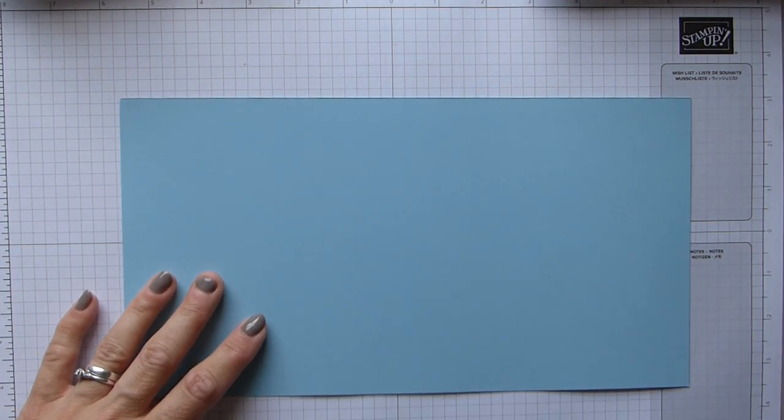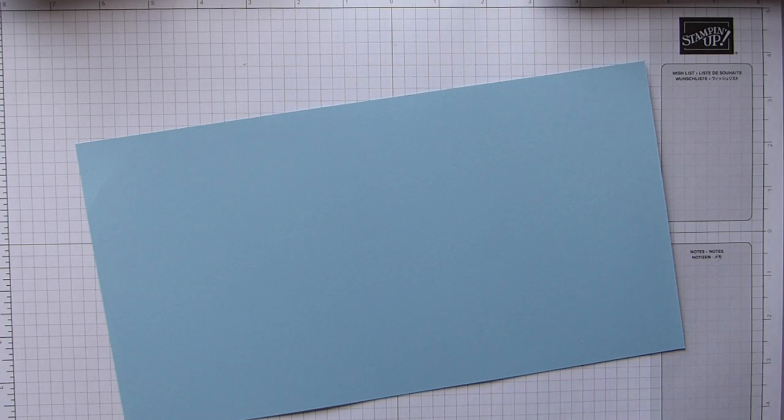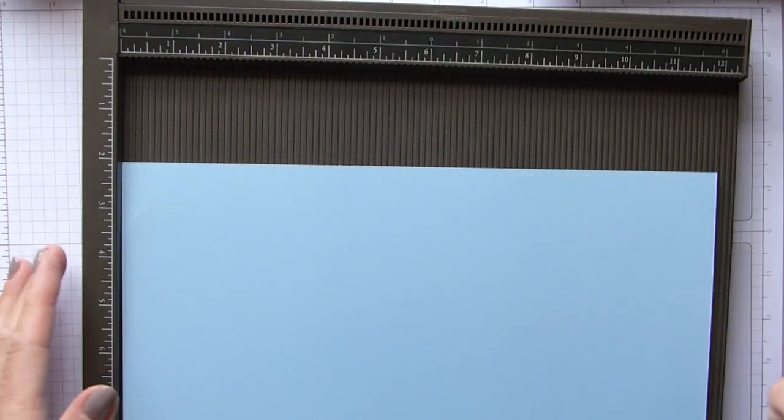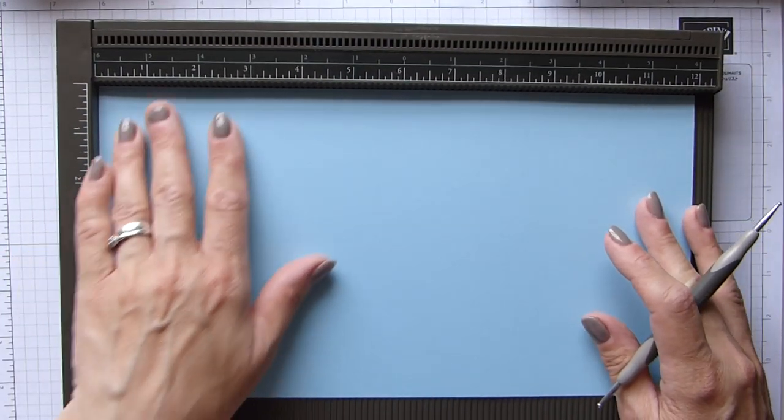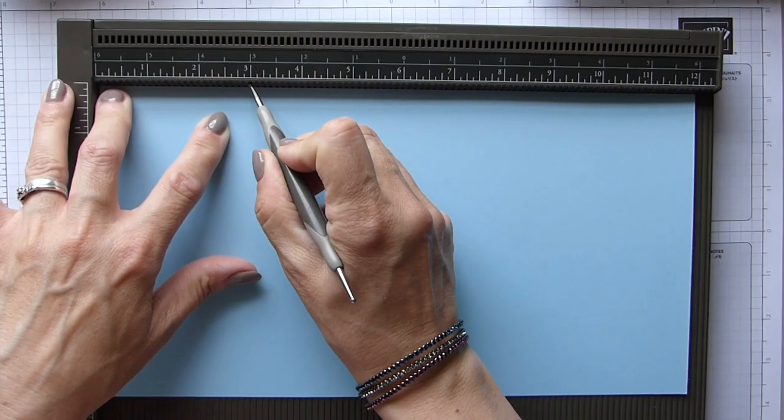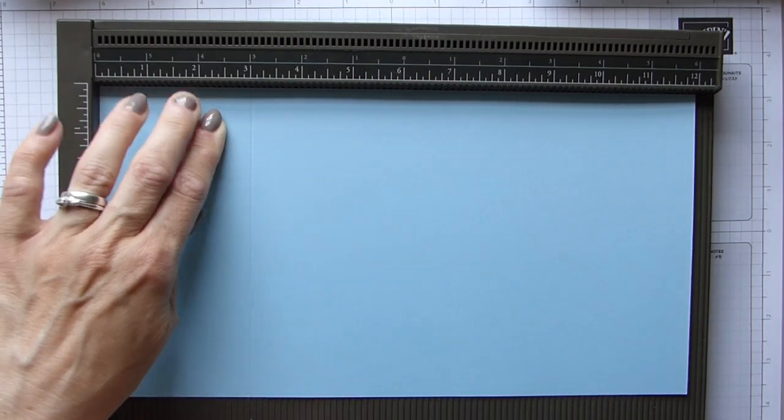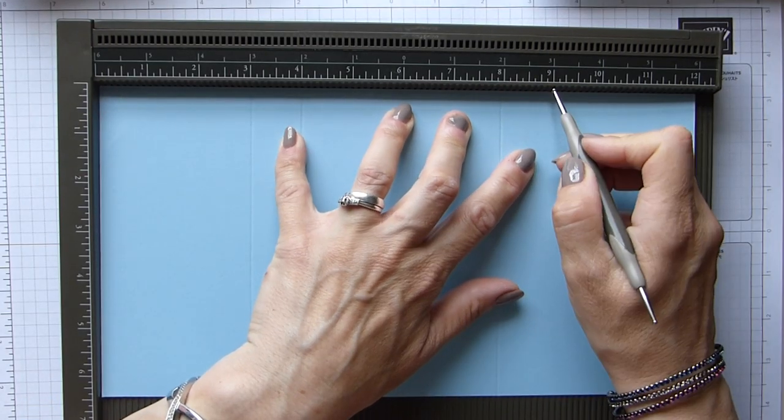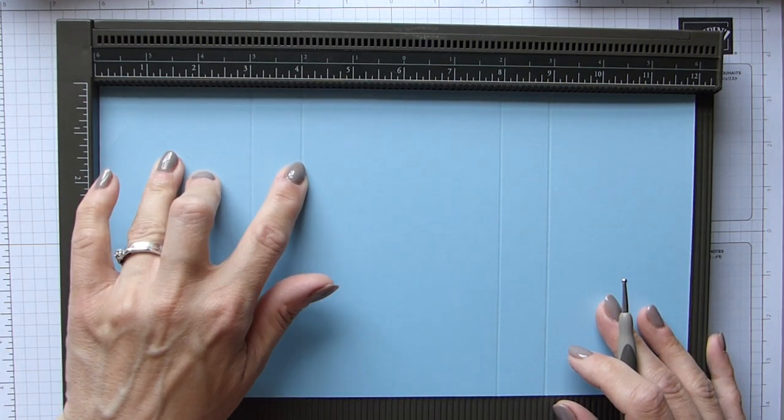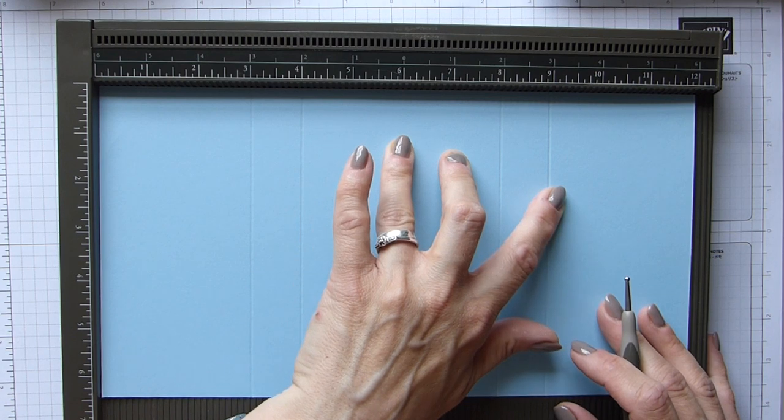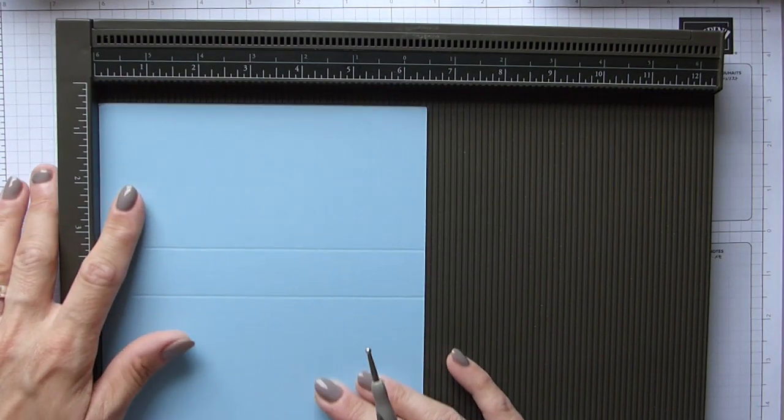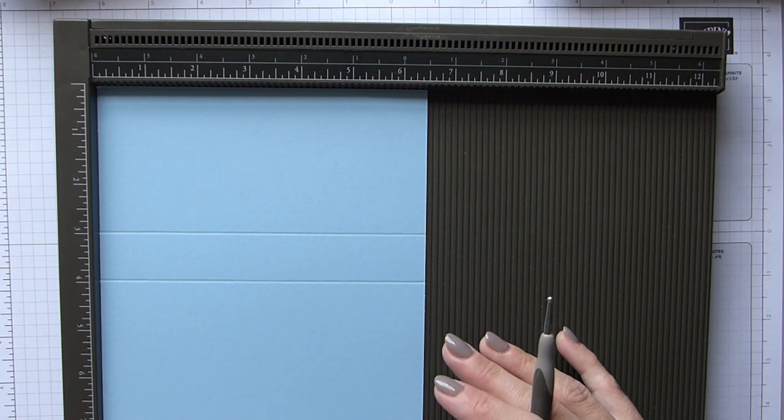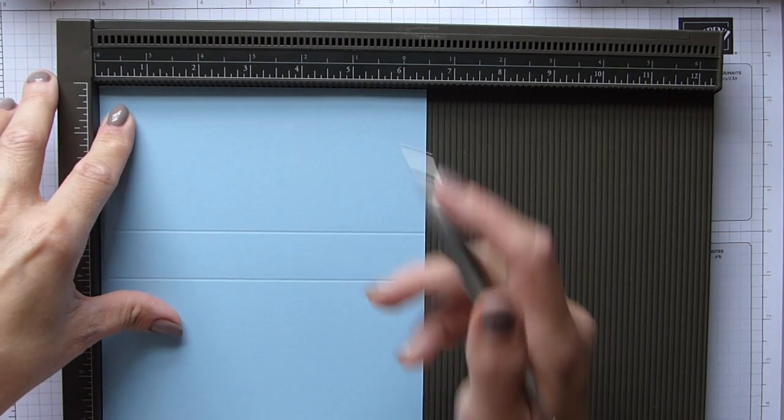To start with your box, you'll need a piece of cardstock that is 6.5 by 12 inches, which is 17 by 13.5 centimeters. On the long side, we're going to score at 3, 4, 8, and 9 inches, which is 8, 10.5, 21, and 22.5 centimeters.